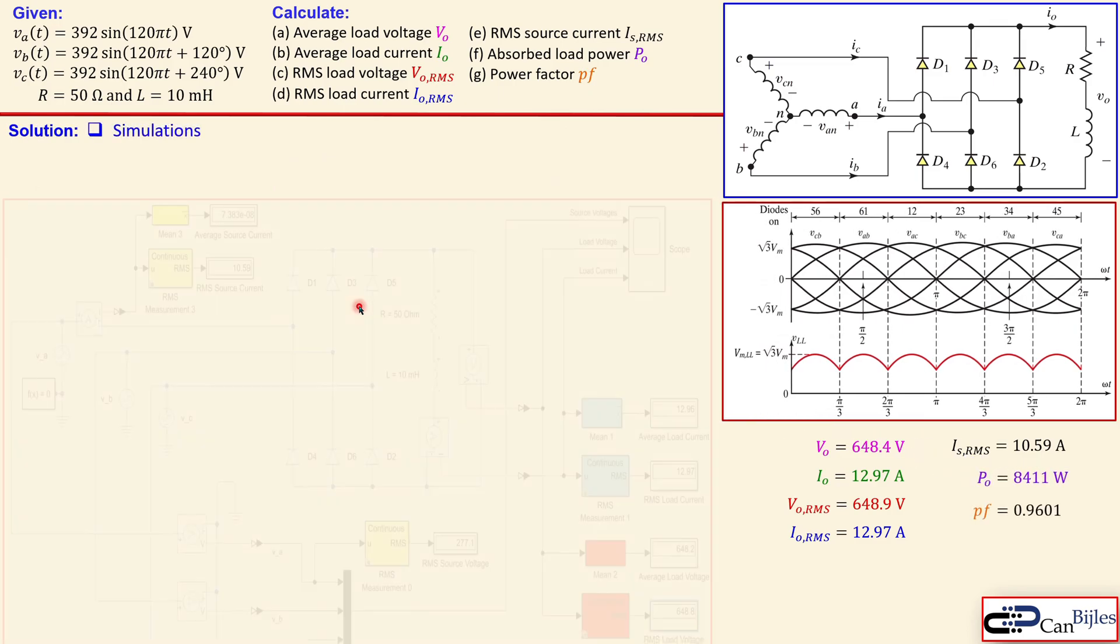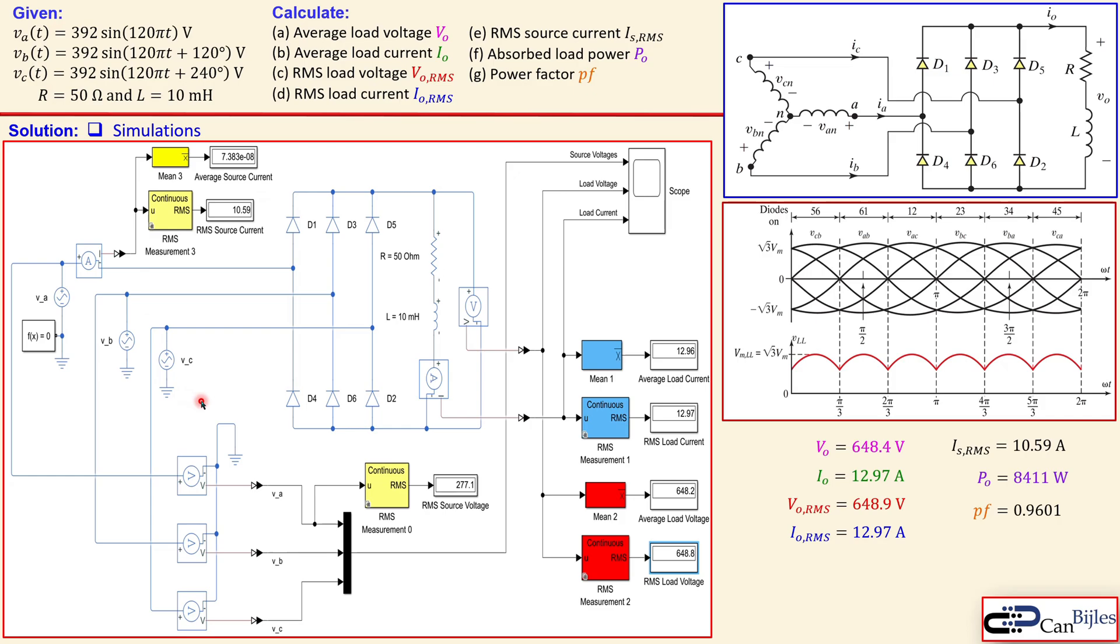Okay collect everything here and now look at the simulation result. This is now the circuit in the Simulink using Simscape elements you see here the six diode the three sources and also the display here for later and also here the scope I mean for later for the graphs and also here the displays. And let's go one by one. This is now our average load voltage you see here 649.2 close to what we have calculated. This is now the average load current 12.96 again close to what we have calculated and this is the RMS load voltage 648.8 also very close to what we have calculated and this is the RMS load current here 12.97 in this case exactly as we have calculated. Okay now then this is done and you also see the RMS current here RMS source current is 10.59 actually also as we have calculated.